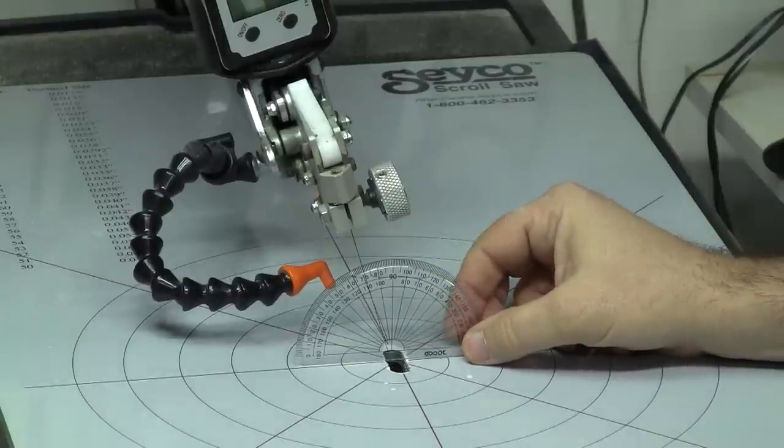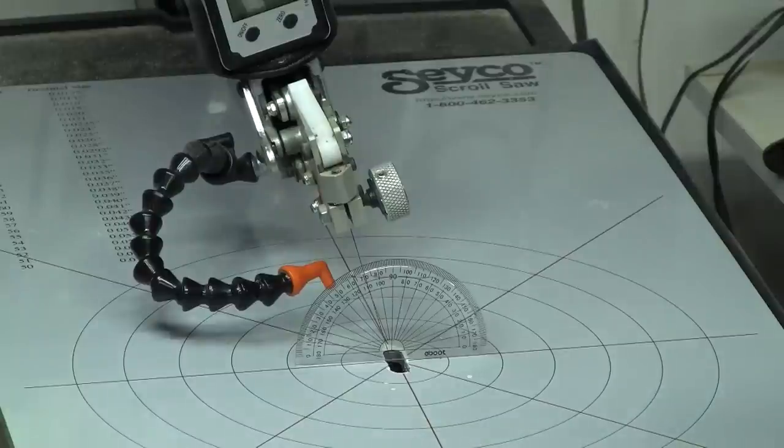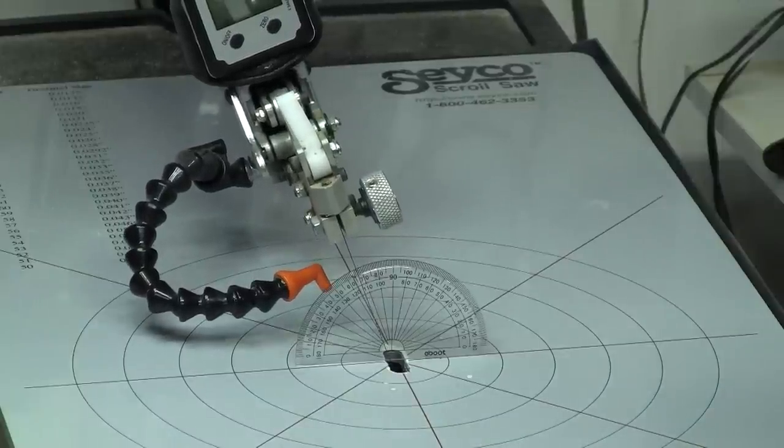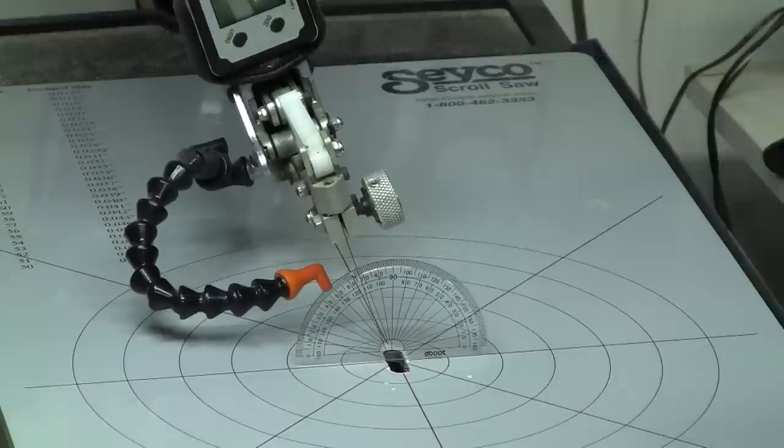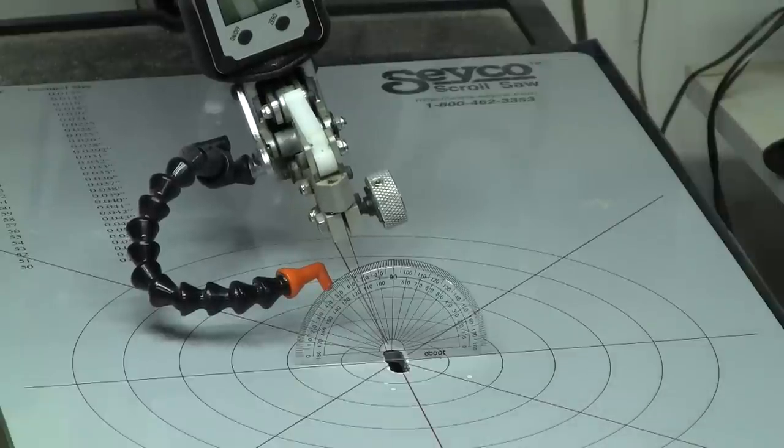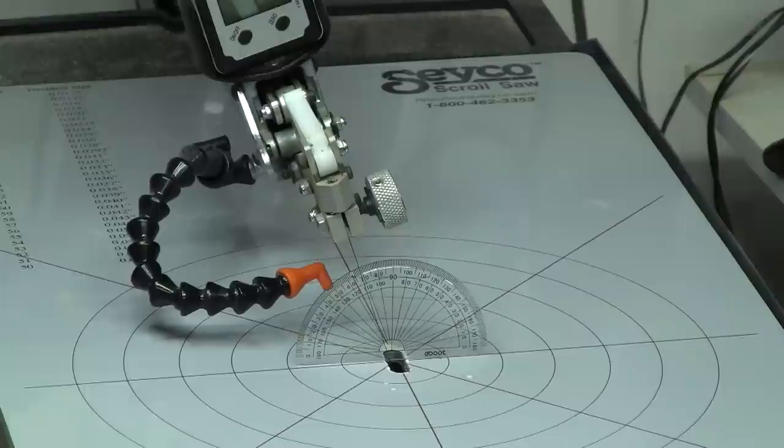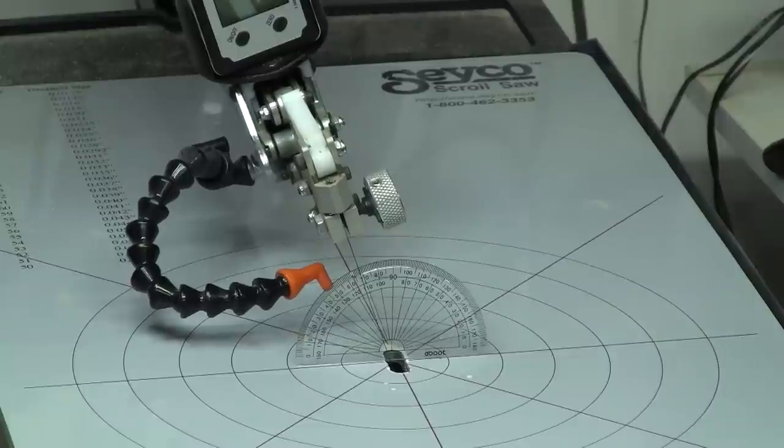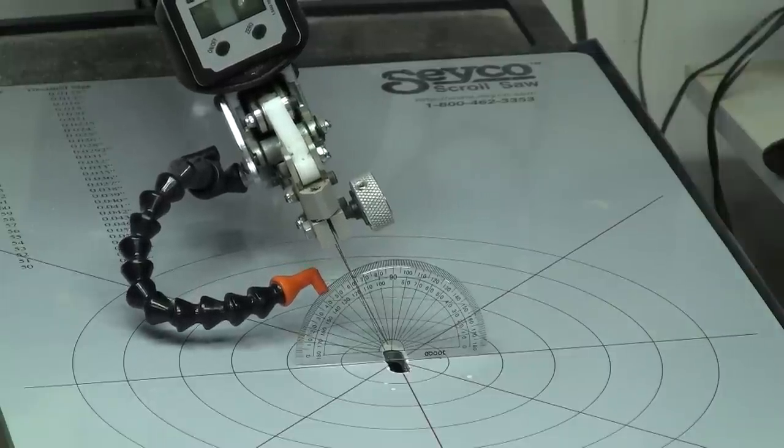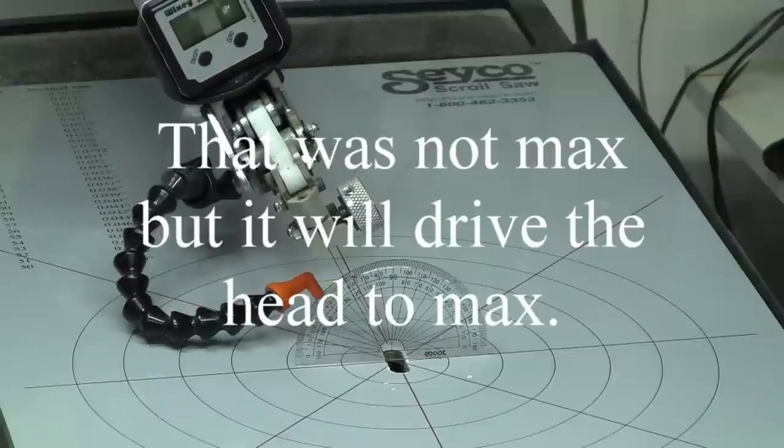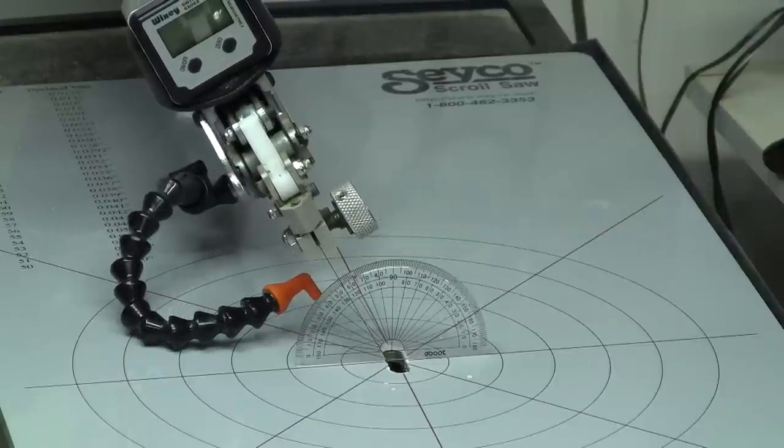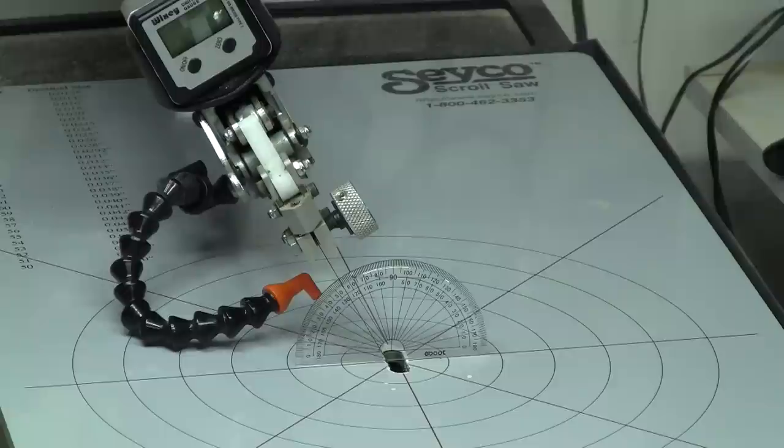Actually that was 20 degrees, I'm sorry. I didn't read the scale right. So it took just a matter of seconds to adjust it over 20 degrees. And we can take it all the way over to this saw's max in just a few more seconds, right there. So that's all it took.